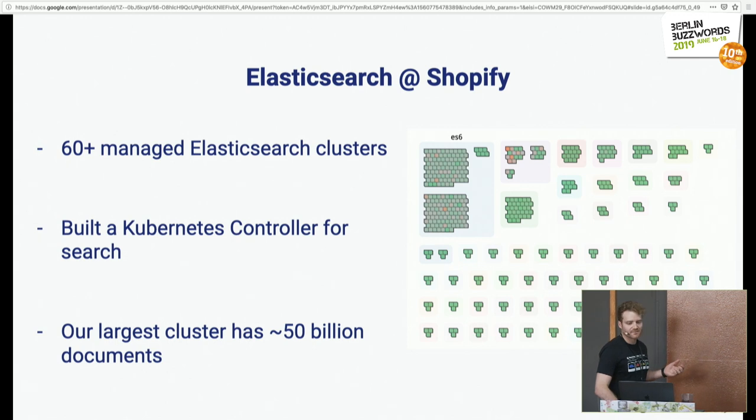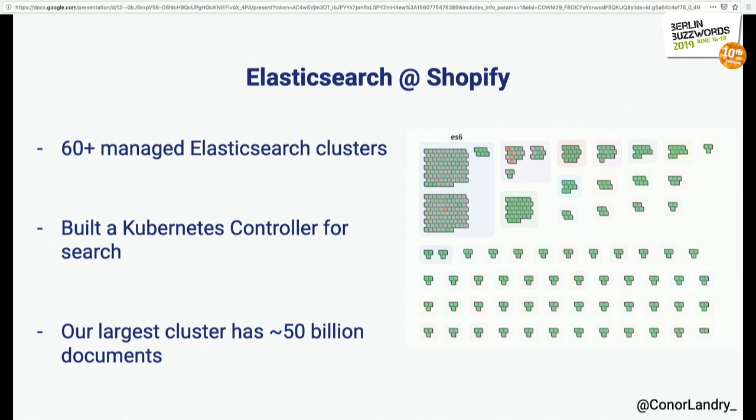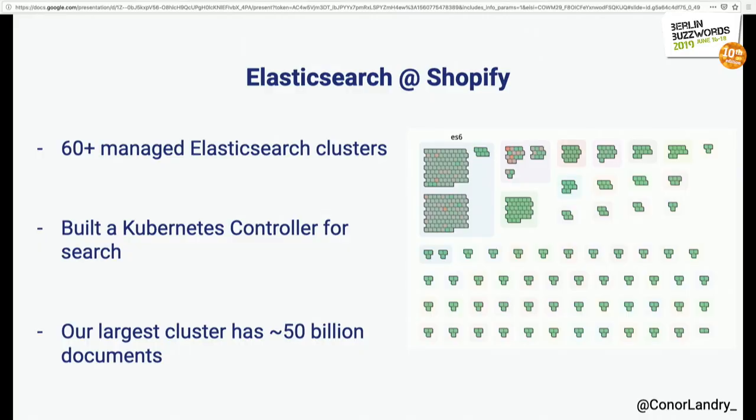Elasticsearch at Shopify: I'm on a team of six engineers called the Search Platform, which seems to be a common name for this team at other companies as well. We have over 60 Elasticsearch clusters at Shopify that use our tooling. We run these Elasticsearch clusters using a Kubernetes controller we built for search. Most clusters are pretty small, but our largest cluster — for the Shopify core monolith in Rails — has 50 billion documents, more or less.